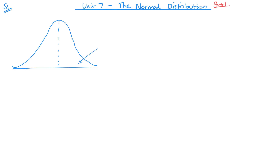This area here will always total one. The area under the curve will total one, and it's all going to be based on our probabilities. What we talk about is that this central point here will be the mean.